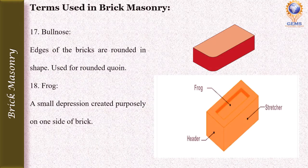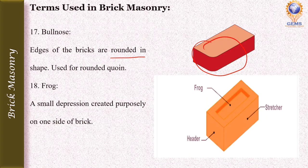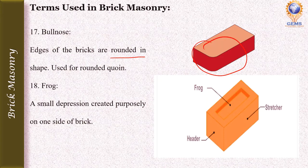Bullnose is a brick whose edges are rounded in shape. It is used for rounded corners or rounded piers — whenever there is a rounded corner, we use bullnose bricks. There are two types: single bullnose and double bullnose. Frog is a small depression created purposely on one side of the brick — on the upper surface of the brick bed. We purposefully create this depression on the top surface of the brick.